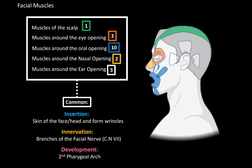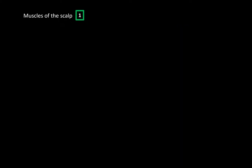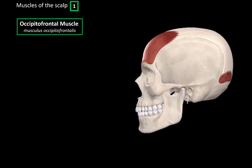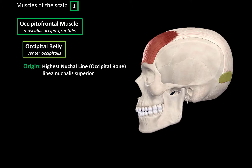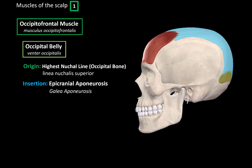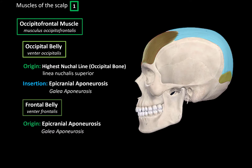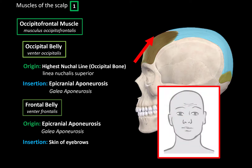Let's start with the muscles of the scalp, which is the occipitofrontal muscle — a flat muscle located on top of the scalp. It consists of the occipital belly, which originates from the highest nuchal line on the occipital bone and inserts at the epicranial aponeurosis, or galea aponeurosis. More anteriorly, you'll find the frontal belly, which originates from the epicranial aponeurosis and inserts at the skin of the eyebrow. The function is to pull the skin of the forehead up, forming horizontal lines on the forehead, while the occipital belly's main function is stabilizing and tensing the aponeurosis.